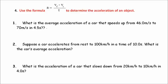We need to identify the final velocity, the initial velocity, and the time. The car speeds up from 46.0 meters per second — that's our initial velocity, labeled V sub i. It speeds up to 70 meters per second — that's the final velocity, labeled V sub f. And 4.5 seconds is the time, t.